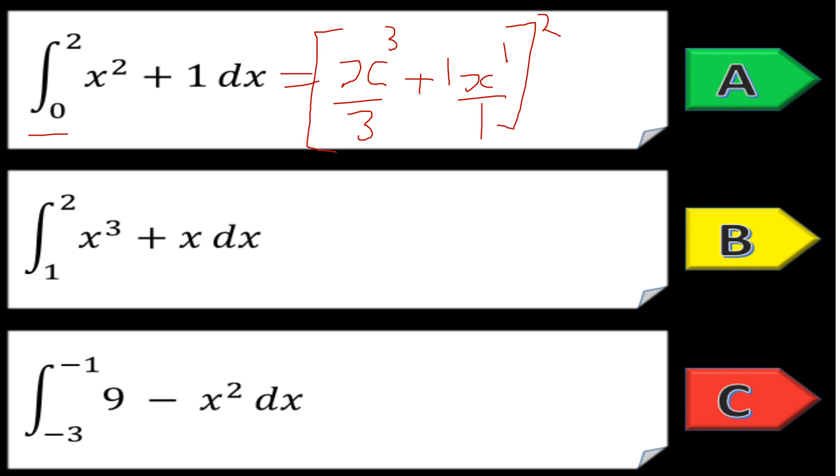The limits are between two and zero. I can now substitute in my limits. It's the top limit minus the bottom limit, so it should be two cubed over three, which is eight thirds, plus one times two, so plus two.